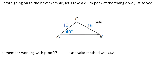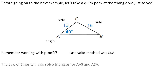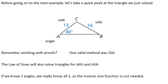We've got Side-Side-Angle here. Since Side-Side-Angle was a valid method with proofs, Side-Side-Angle is also a valid way we can solve a triangle — because if we give you three pieces, you can find the other three. The Law of Sines is going to work with any triangle that is Angle-Angle-Side or Angle-Side-Angle, in addition to Side-Side-Angle. That's because if we know two angles we really know all three, and we won't even have to use the inverse sine function.